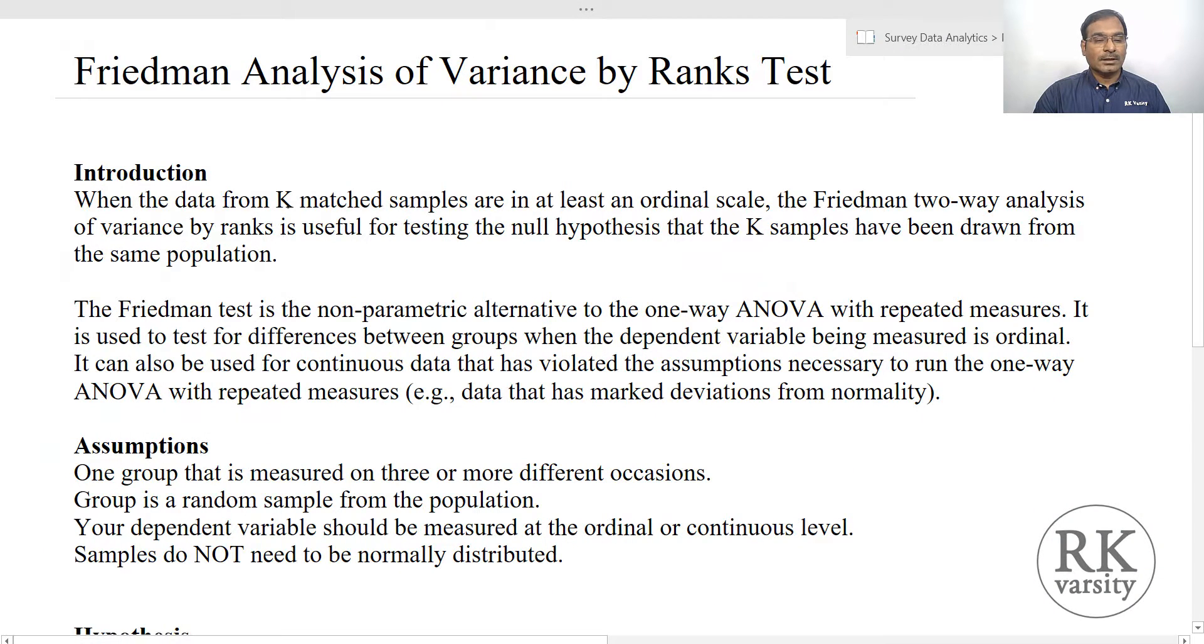I will show this with an example borrowed from a textbook by Mrs. Miller, and I will run the analysis using IBM SPSS, interpret the result, and also show you how to frame the hypothesis for Friedman's test. So when your data comes from K matched samples or at least an ordinal scale, the Friedman's two-way analysis of variance by ranks is useful for testing the null hypothesis that K samples have been drawn from the same population.